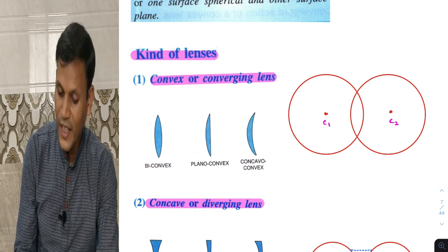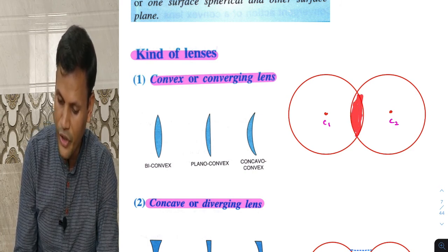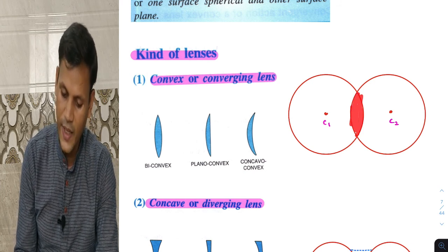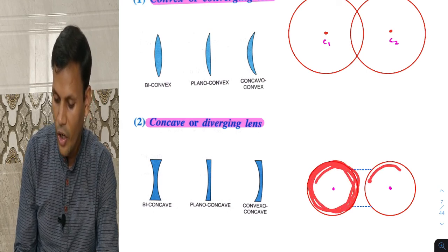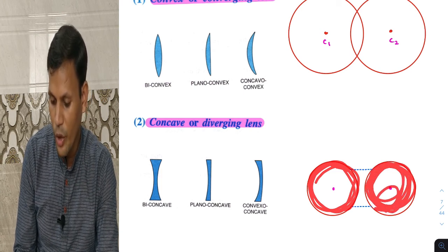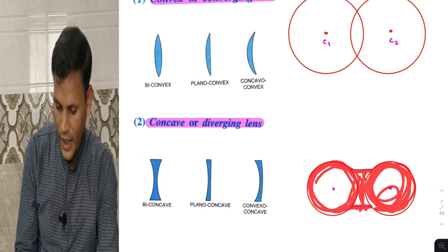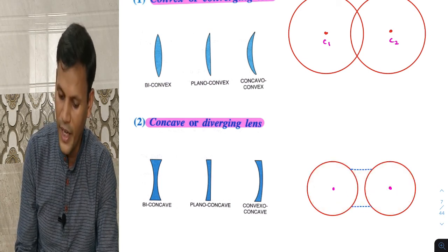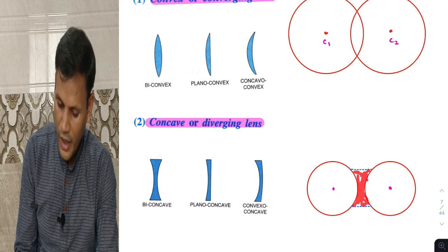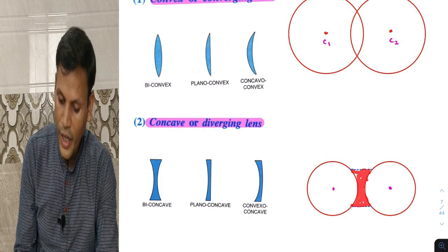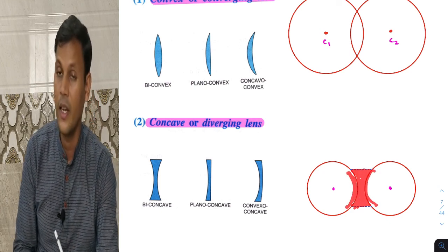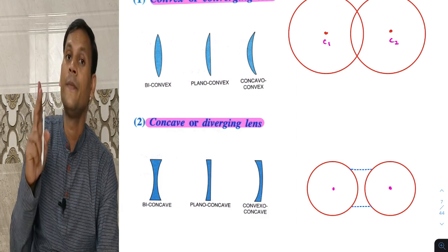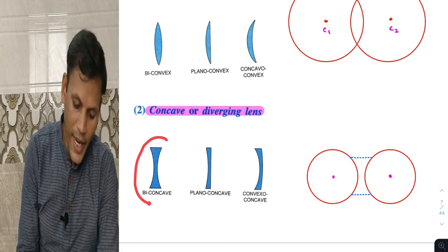This was convex lens formation. Now if we take two spherical surfaces and fill the space with a material like glass, a concave lens is formed. It is bi-concave because 'bi' means two and both surfaces are concave.